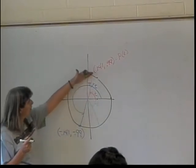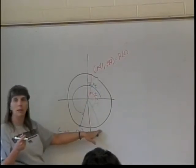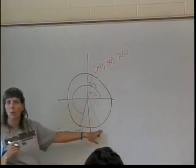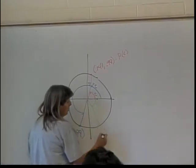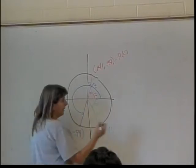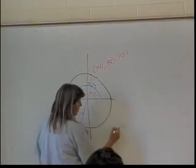So what happens when I reflect over? What happens to the coordinates of this point? Because that's where it's going to be down here. What happens to the coordinates of the point? X stays the same. So that's 0.141 and y becomes negative. So 0.99 but negative.